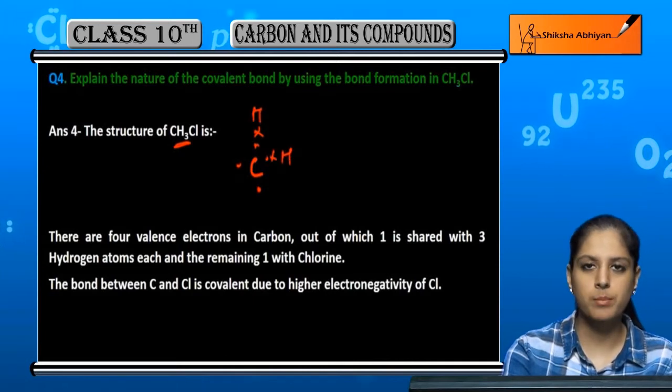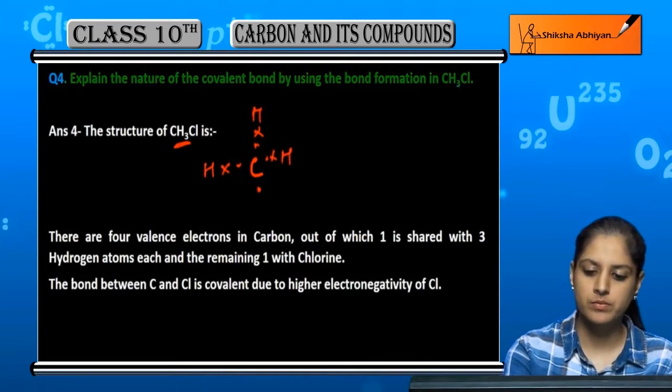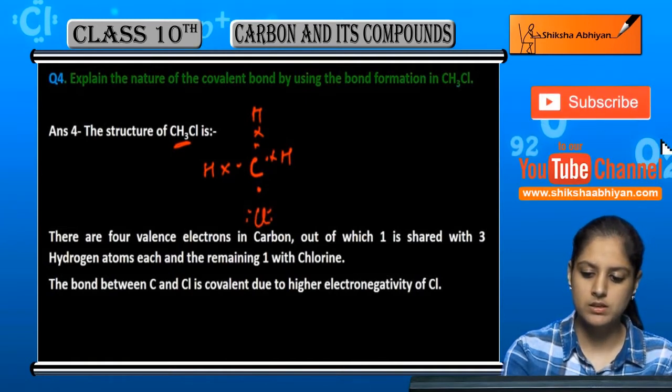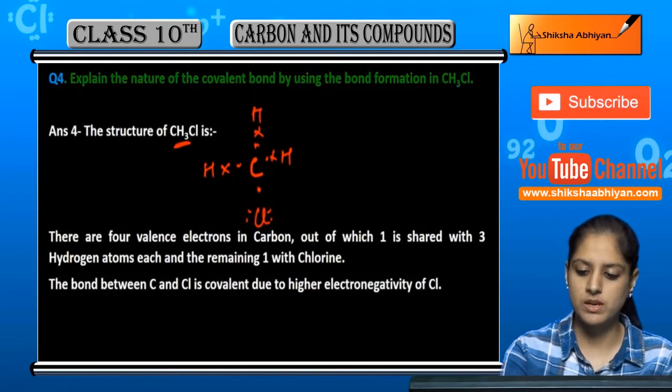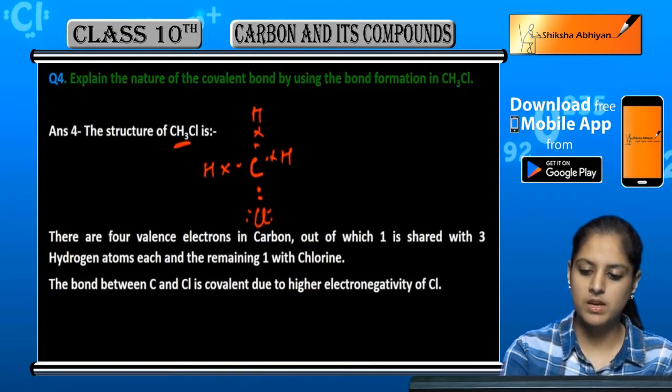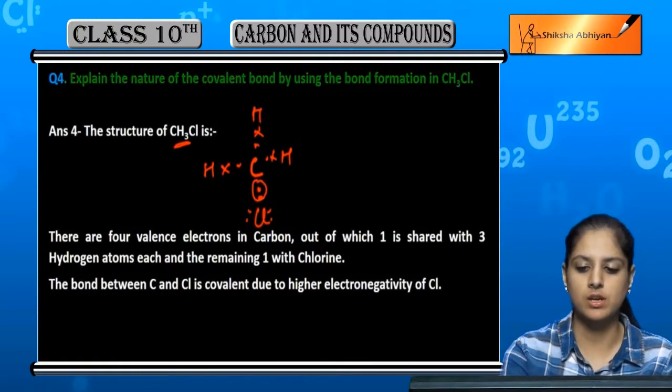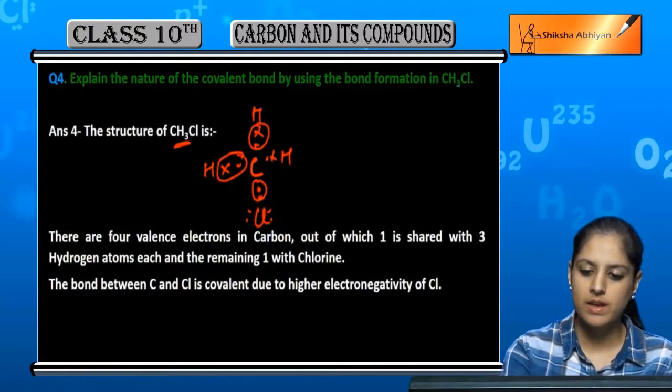And about chlorine - chlorine has a total of 7 outermost electrons. So it has 6 electrons, and 1 electron is shared with carbon. This is how it becomes CH3Cl covalent bond.